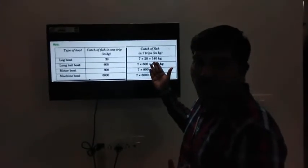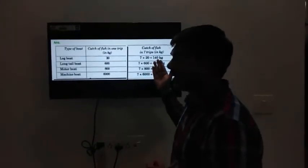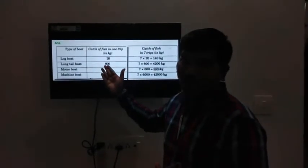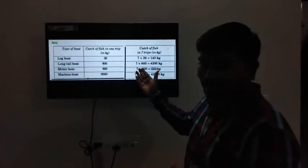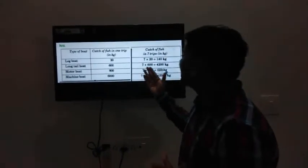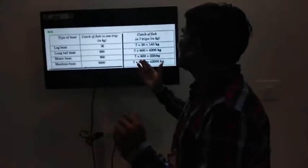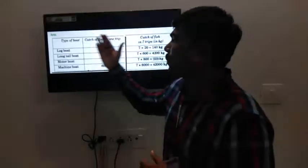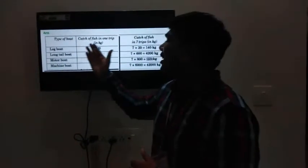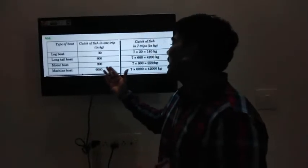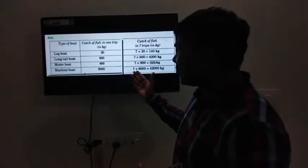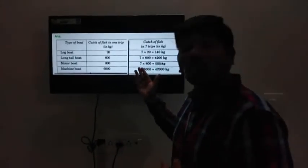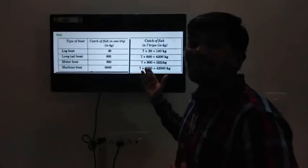Motor boat brings 800 kg of fish in one trip, so in 7 trips it will bring 7 multiplied by 800, answer will be 5600 kg in 7 trips. Machine boat in one trip, 6000 kg, and in 7 trips, it will be 7 multiplied by 6000, answer will be 42,000 kg of fish in 7 trips.